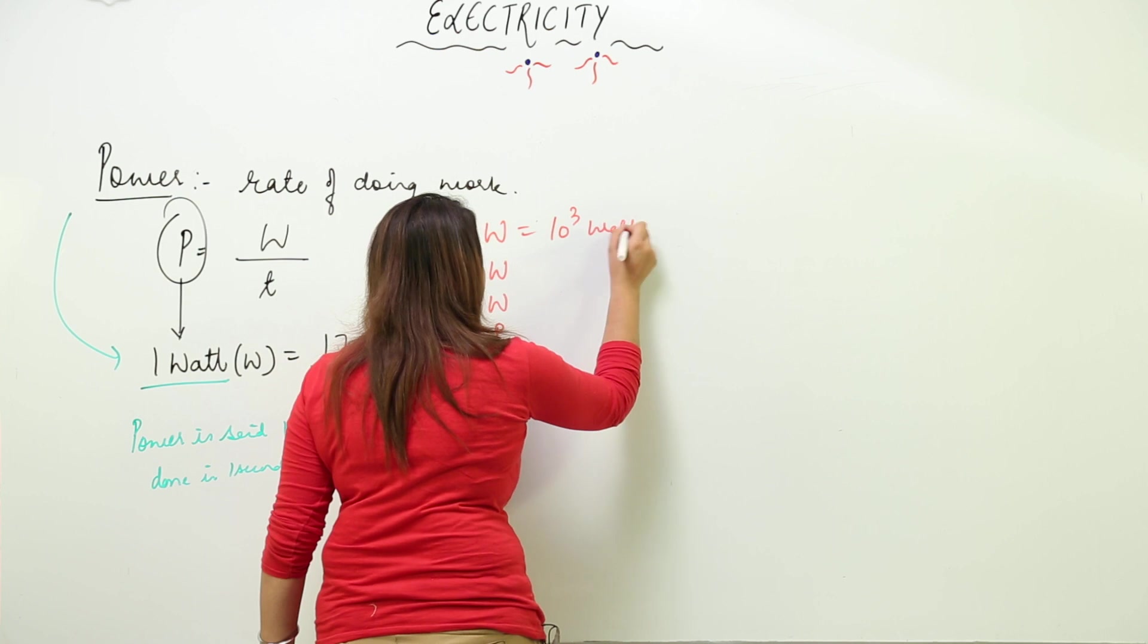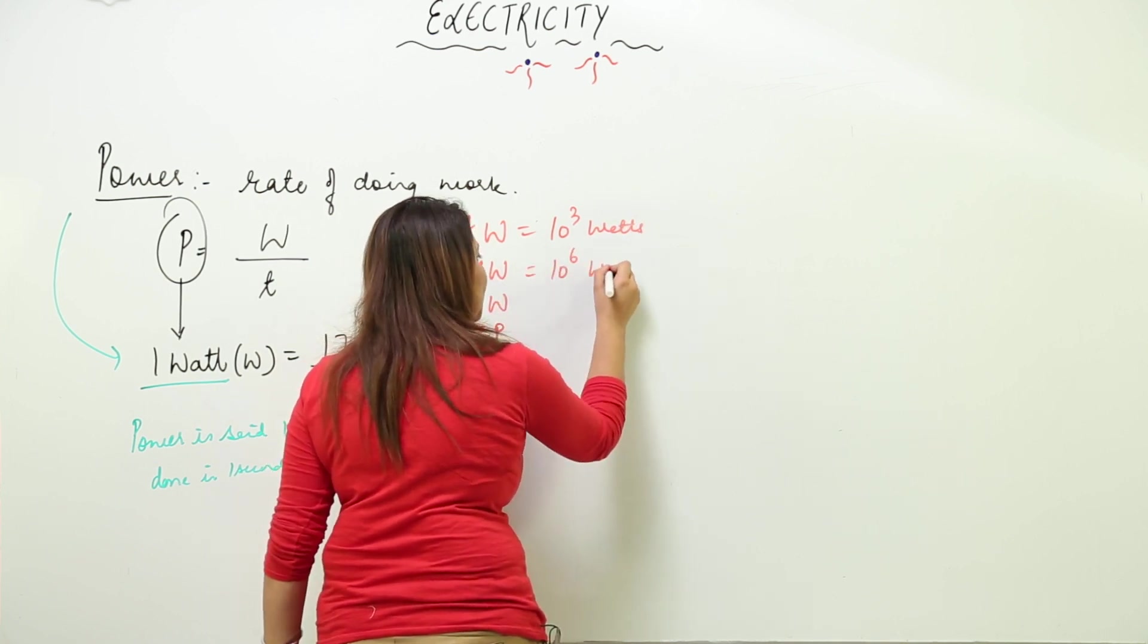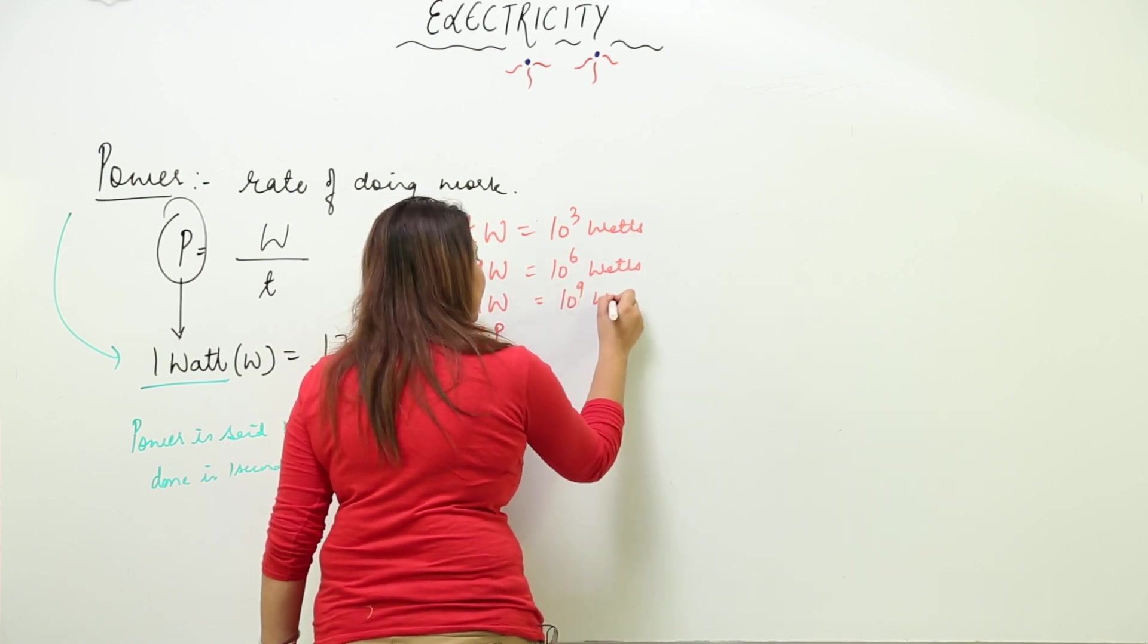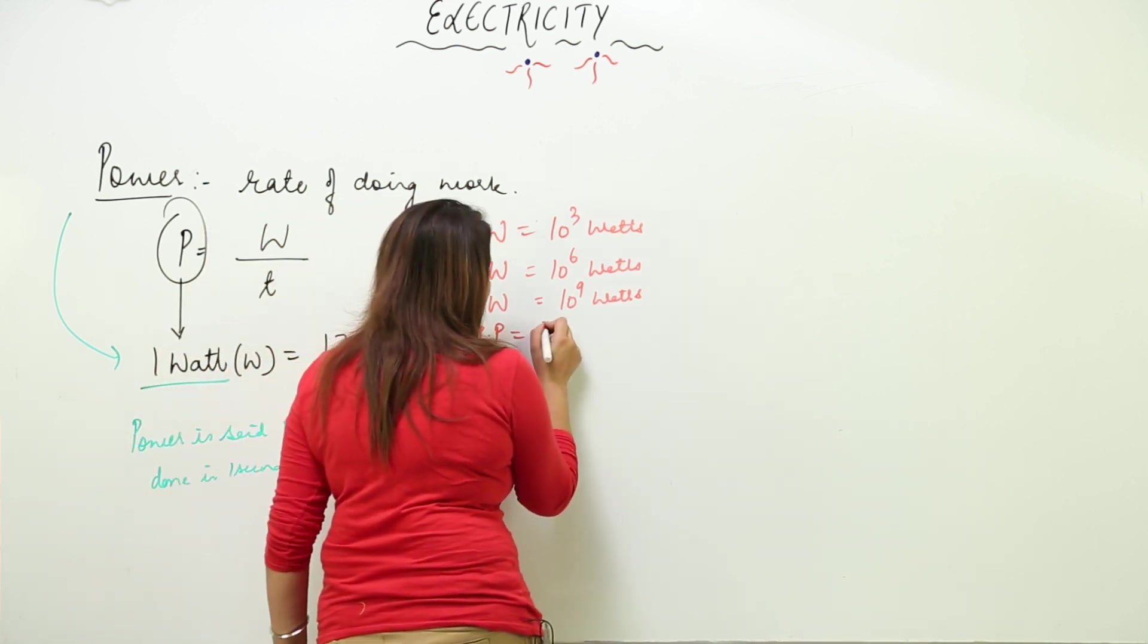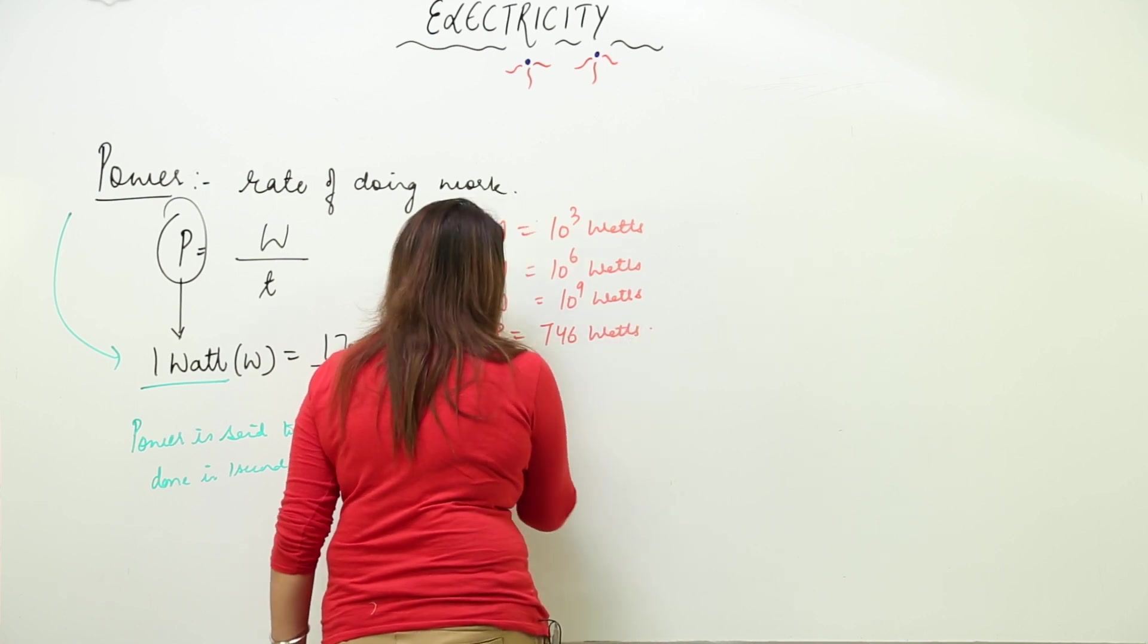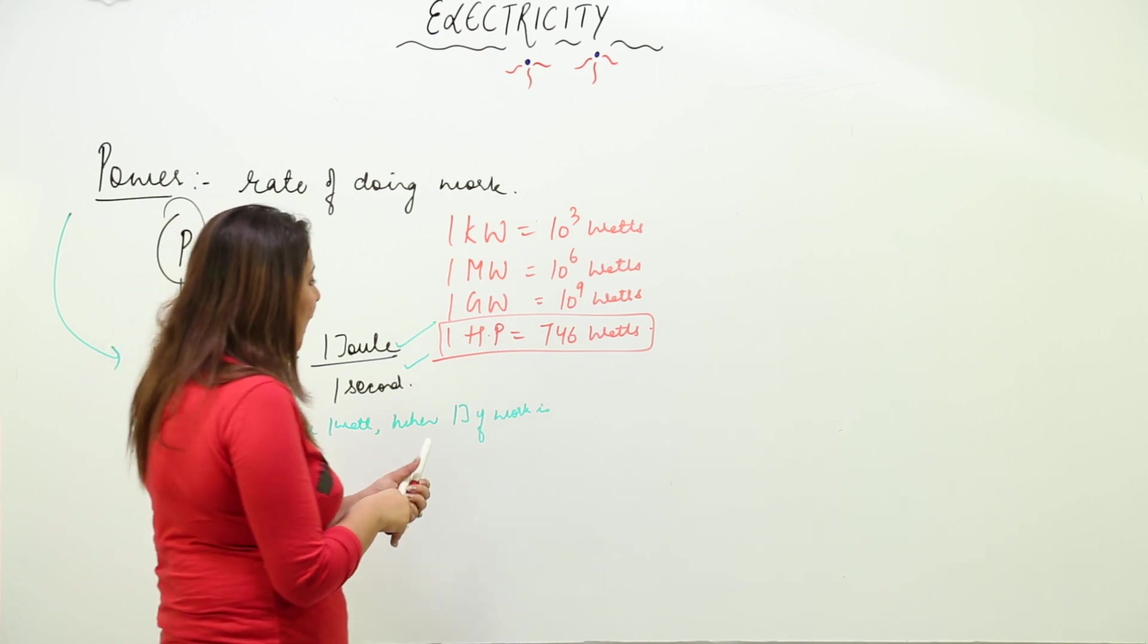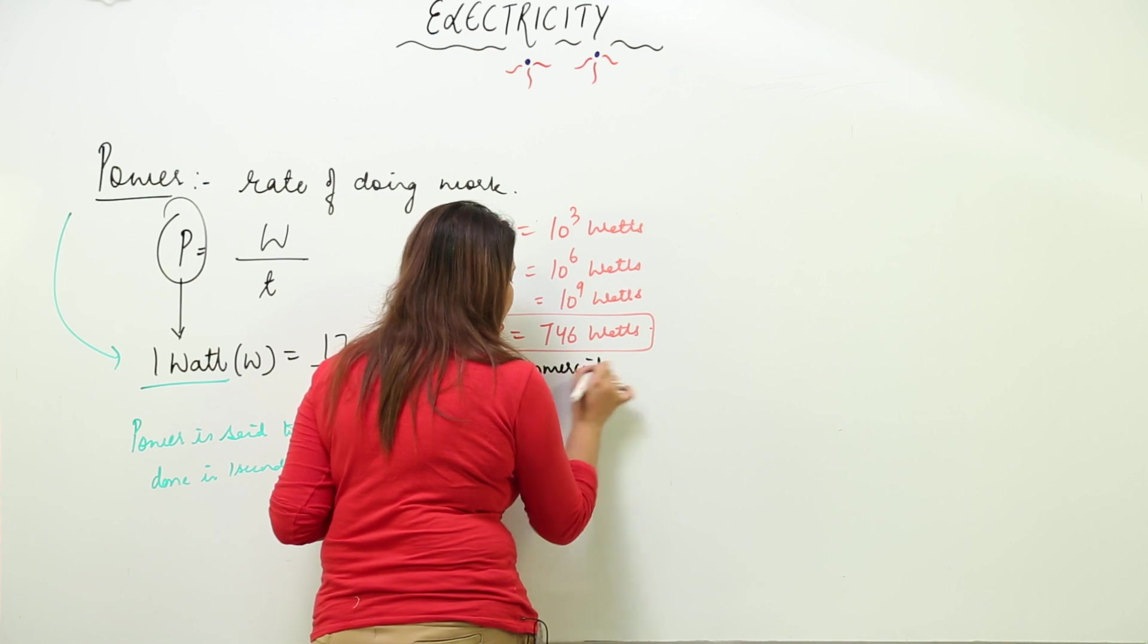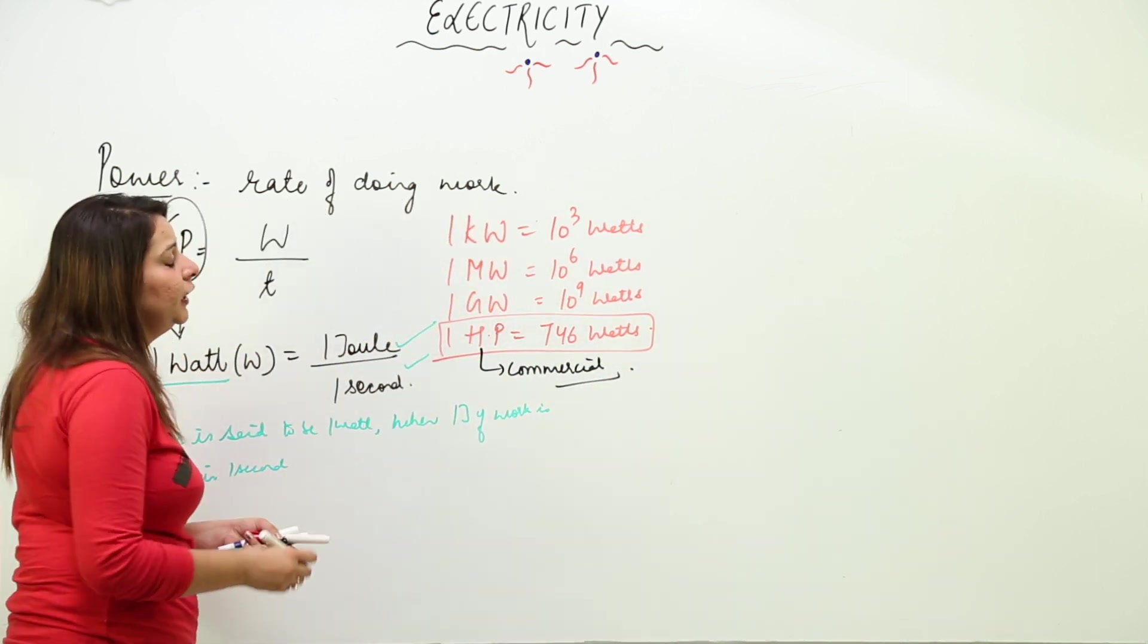1 gigawatt equals 10⁹ watts. There's also an older unit, horsepower. 1 horsepower equals 746 watts. The SI unit is watt, but the commercial unit is horsepower.